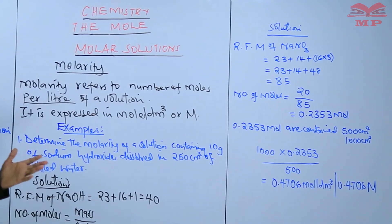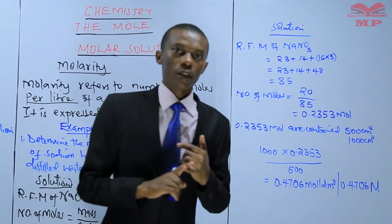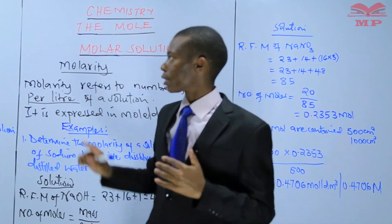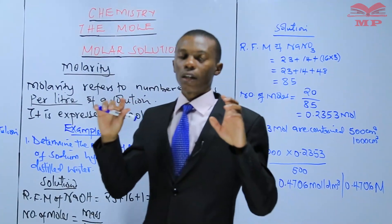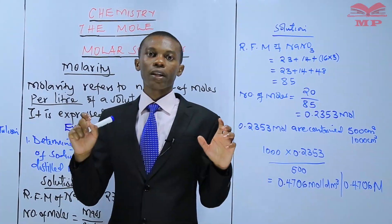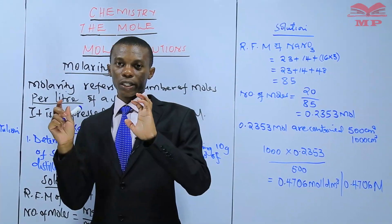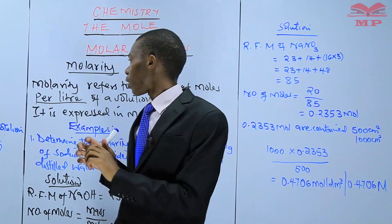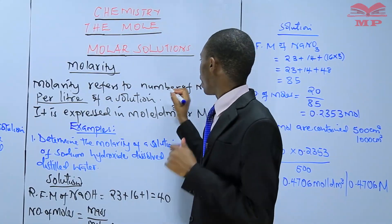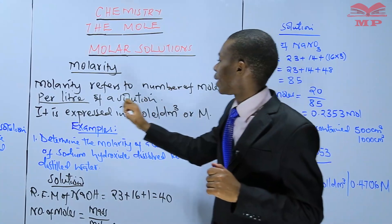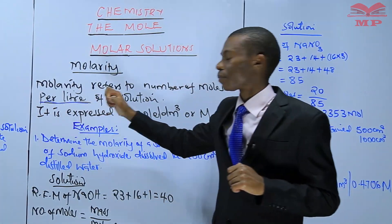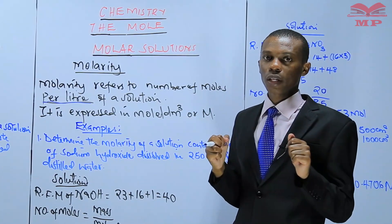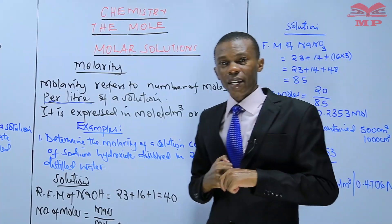That is how we go about these questions. To calculate molarity, you need to first get the number of moles. When you get the number of moles, you can then equate: if these moles are in this volume, what about 1,000 centimeters cubed? Because molarity is the number of moles contained in 1 liter. The number of moles contained in 1 liter of a solution — that is what molarity is.